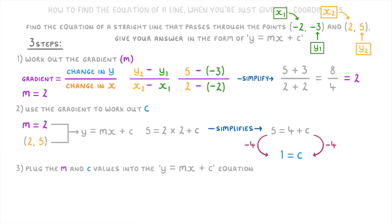And finally for step 3, now that we know that c = 1 and m = 2, we can plug these values into the y = mx + c equation to find that the general equation for this line is y = 2x + 1.